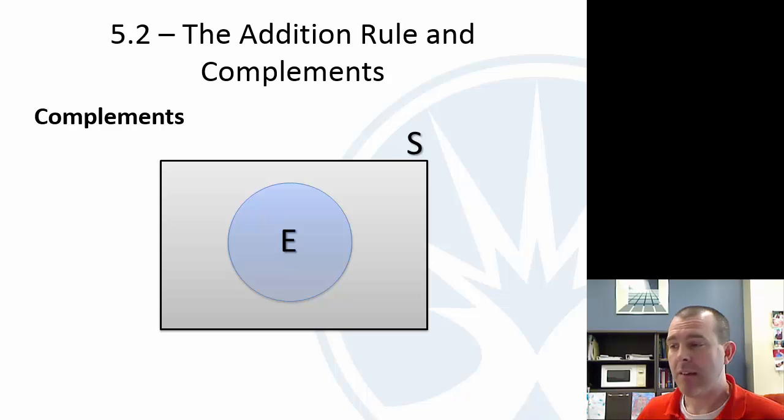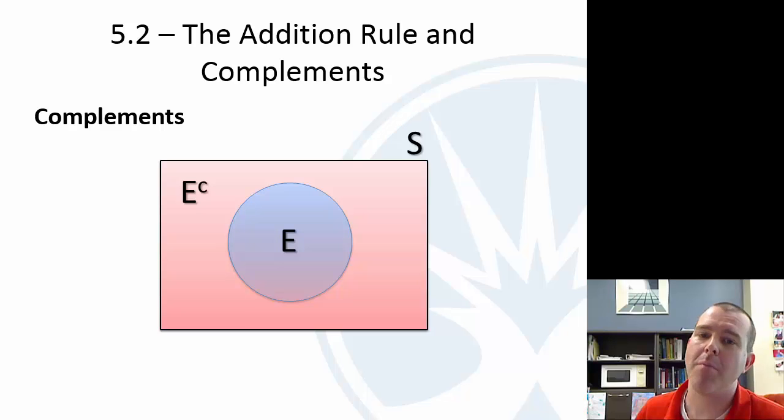If we have event E, and I'm not putting any dots here, but this is the event E, the complement is everything else. And so we use, there's different notations for this, by the way, but the one that our book is using, little E and then the little exponent there, kind of of C, is the complement of E.